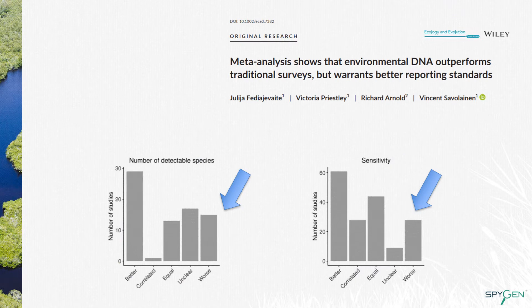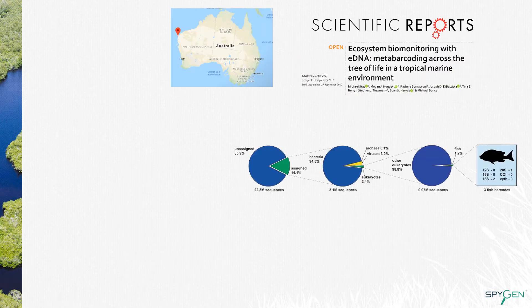However, coming back to the meta-analysis, it is possible to see that not in all cases does eDNA perform better than traditional surveys. It should be noted that all eDNA should not be considered the same. In this illustrative article, the authors went to a bay in Australia, collected a water sample, and sequenced all the DNA present in the samples. The majority of sequences obtained could not be assigned — meaning no sequences were present in the reference database to identify the species. And from the DNA that was found, very few portions were from fish species.